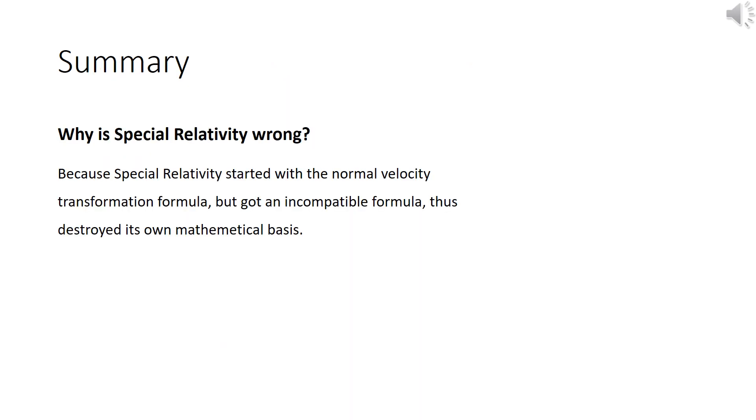So a very high-level summary of why special relativity is wrong is because it started from the normal velocity transformation formula but obtained an incompatible formula from it, thus destroying its own mathematical basis.